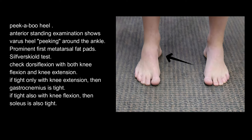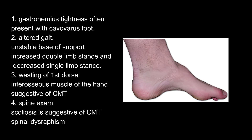The Silfverskiöld test checks dorsiflexion with both knee flexion and knee extension. If tight only with knee extension, then the gastrocnemius is tight. If tight also with knee flexion, then the soleus is also tight. Gastrocnemius tightness is often present with cavovarus foot. Altered gait shows an unstable base of support with increased double limb stance and decreased single limb stance. Wasting of the first dorsal interosseous muscle of the hand is suggestive of CMT.